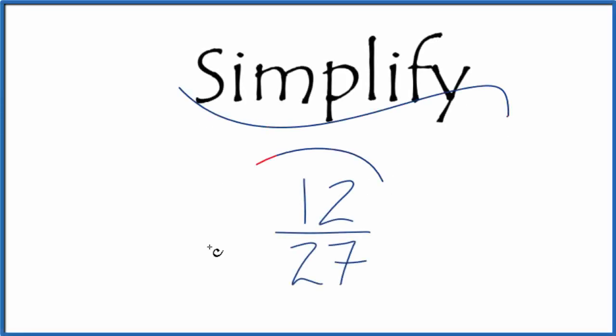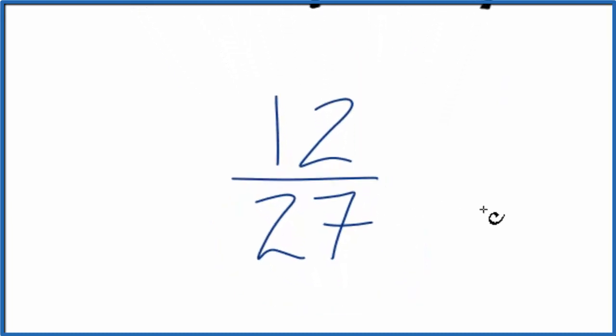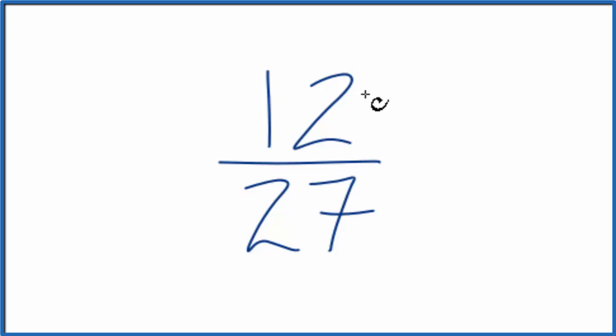Let's simplify the fraction 12/27. What we're really trying to do here is find another fraction that's equivalent. It has the same value as 12 over 27, but it's written in the lowest terms.